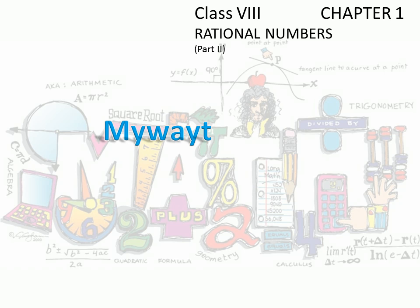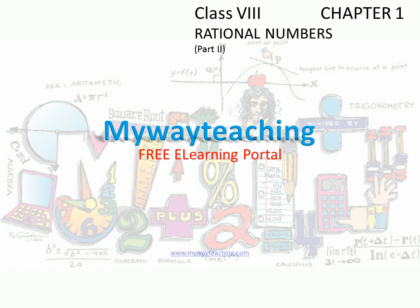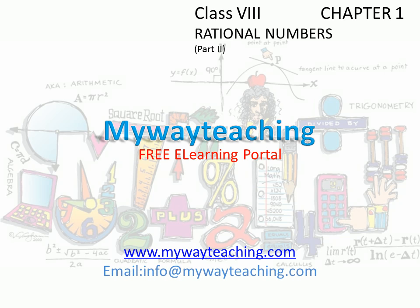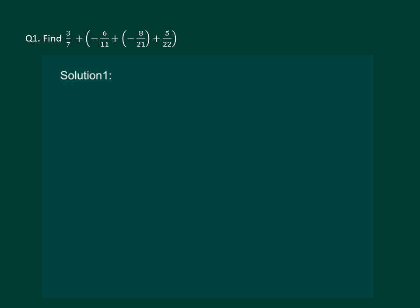Hello friends, this video is brought to you by www.mueyteaching.com. Let us read the question. Find 3/7 plus (-6/11) plus (-8/21) plus 5/22.